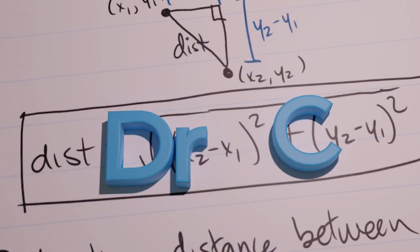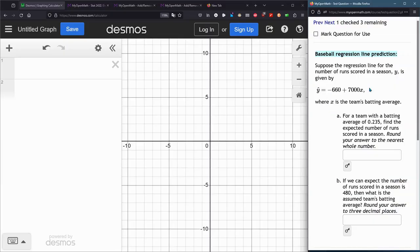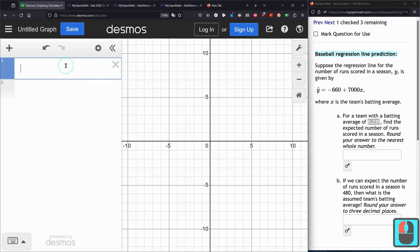In this question, we are given a linear relationship, not the data, but just the linear equation. x is a team's batting average, y is the number of runs in a season. The first part for a team batting average says find y given an x value. I can definitely do that in Excel. Let's go ahead and do that right now.